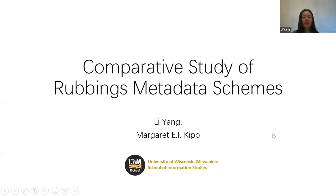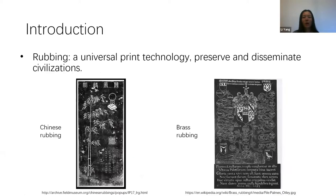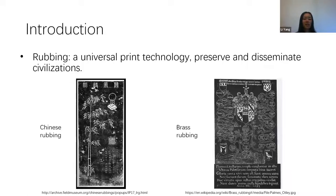Hello everyone, thank you Gemma for introducing me. Today I'm going to present an overview of the comparative study of rubbings' metadata schemes. Rubbings have been a universal print technique known for centuries to preserve and disseminate cultures across countries — for example in China, Germany, Japan, and the UK. In China, the earliest rubbings can be dated to the Tang Dynasty (618–907 AD). In the UK, brass monuments first appeared around the 13th century, and brass rubbings were introduced later.